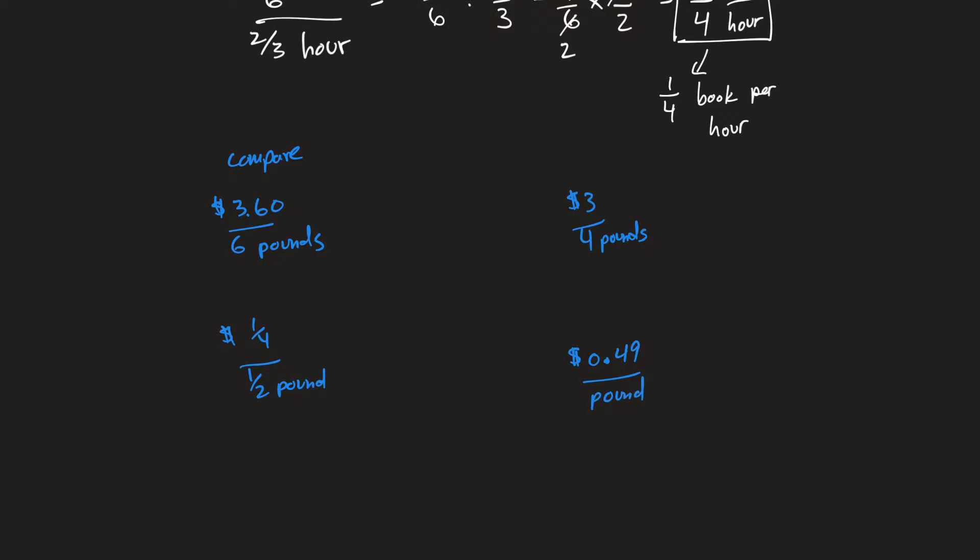Well, you have to find the unit rate for each of these. Now, what you would do for this, it'd be three sixty divided by six, which means it's six into three dollars sixty cents. That's zero, this is six, that's thirty-six, and this is zero. This means it's sixty cents.